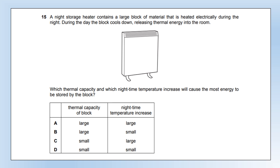A night storage heater contains a large block of material heated electrically at night. During the day it cools, releasing thermal energy into the room. Which combination of thermal capacity and nighttime temperature increase causes the most energy to be stored? Energy stored equals thermal capacity times temperature change (E = CΔT). To store more energy we need a larger thermal capacity or a larger temperature change. Eliminate C and D (small heat capacity means less energy stored). The answer is option A: large thermal capacity and large temperature increase.